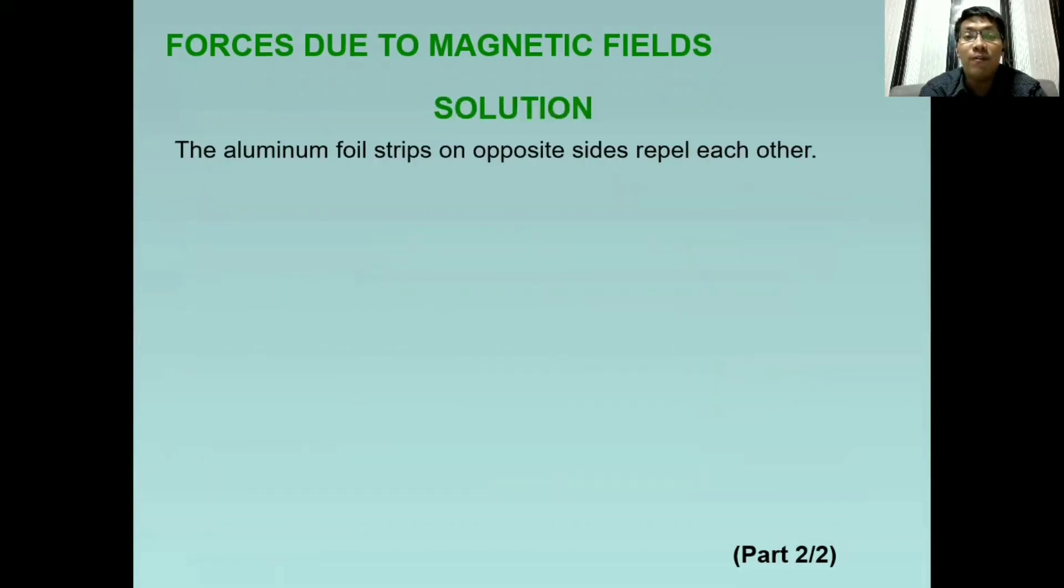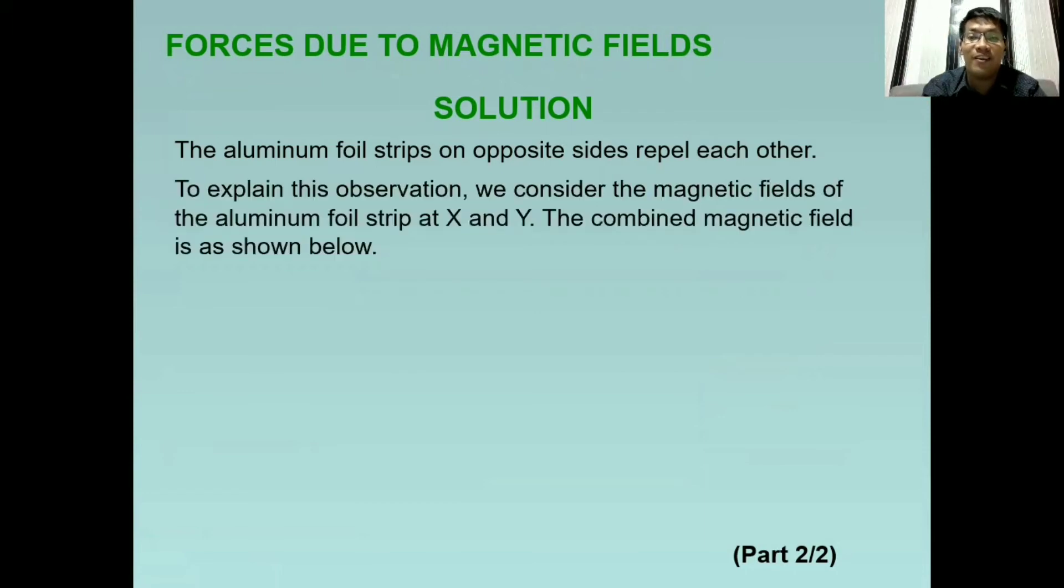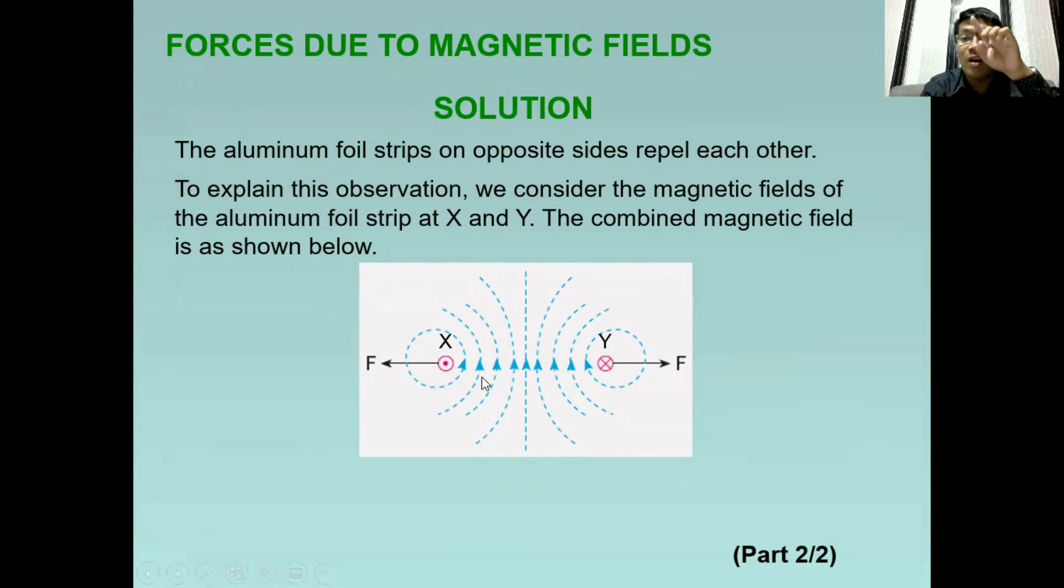The aluminum foil strip on the opposite side repel each other. So bakit kaya? Let's use this diagram. So kung titignan natin yung X side ng ating aluminum foil, yung magnetic field na nabuo